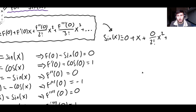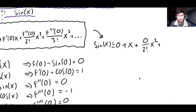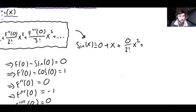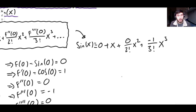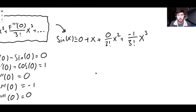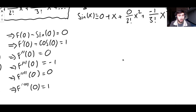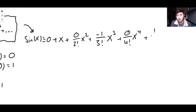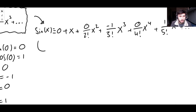The next term is the third derivative evaluated at zero, which is minus one, over three factorial times x cubed — so plus minus one over three factorial times x cubed. The next term is the fourth derivative at zero divided by four factorial times x to the four — the fourth derivative is zero, so that term is zero. Then the fifth derivative evaluated at zero is one, so we get plus one over five factorial times x to the power of five, and so on forever.